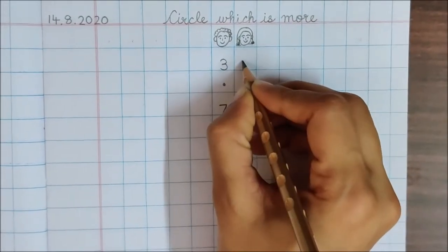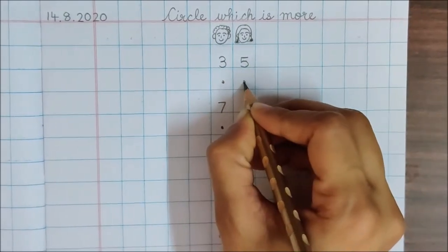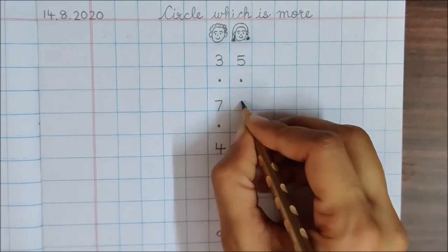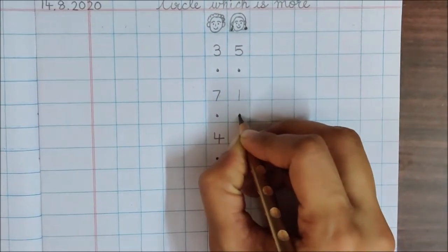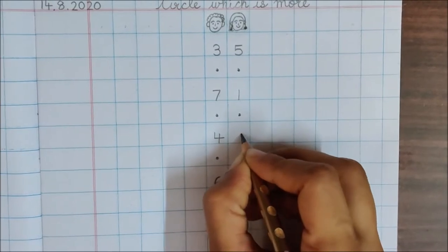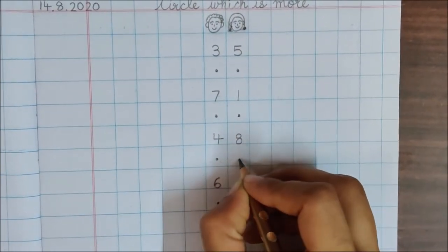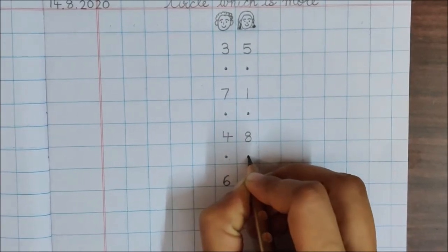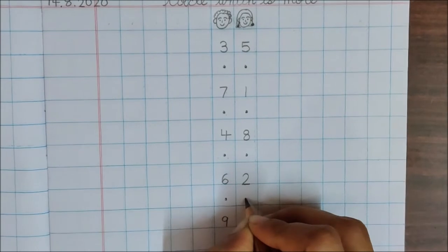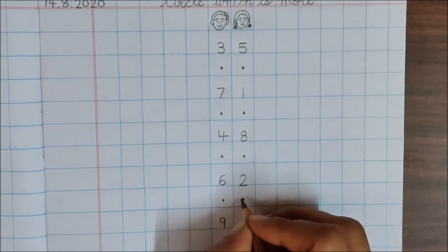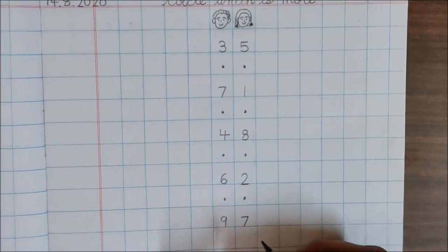Now below 5, put a dot. Now below dot, write 1, dot, 8, dot, 2, dot, 7.